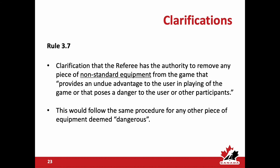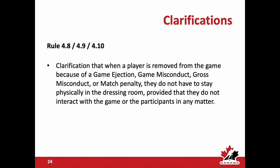Rule 3.7: a referee now has the authority to remove any piece of non-standard equipment from the game that provides an undue advantage to the user or poses a danger to the user or other participants. This follows the same procedure as any other piece of equipment deemed dangerous. Previously there were many specific rule references for individual pieces of equipment; now this is more broadly encompassing and those unique interpretations have been deleted to reduce content.